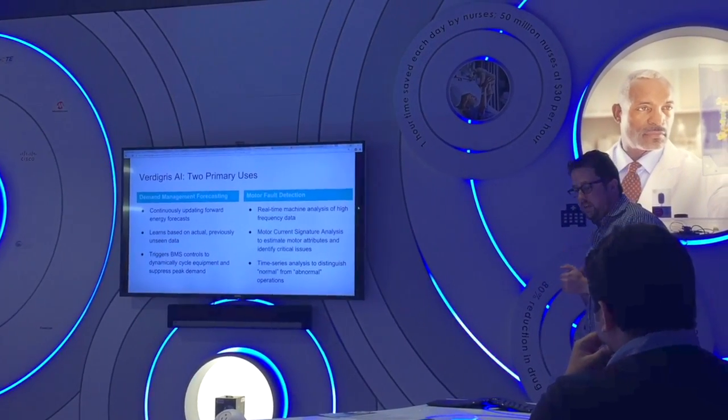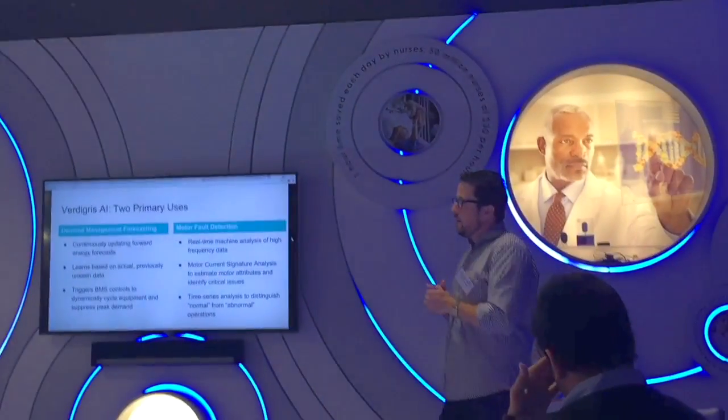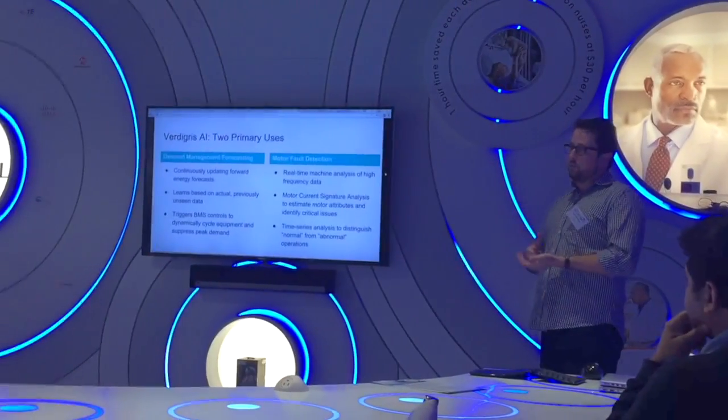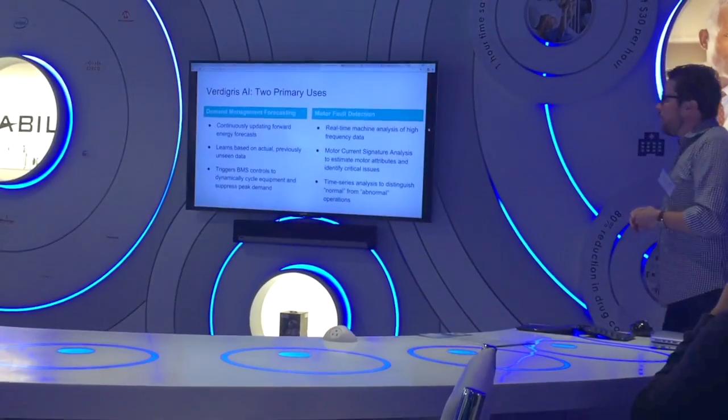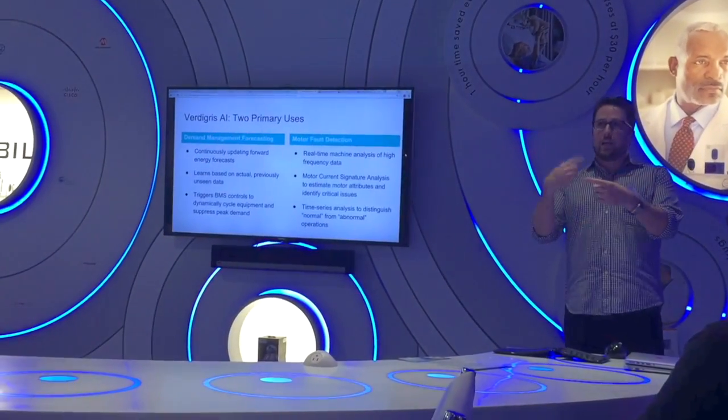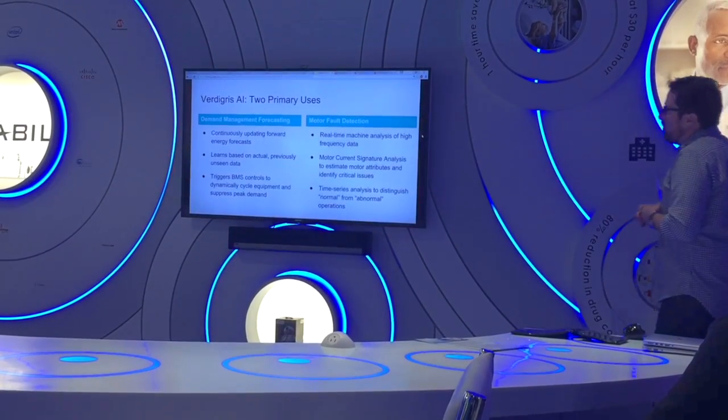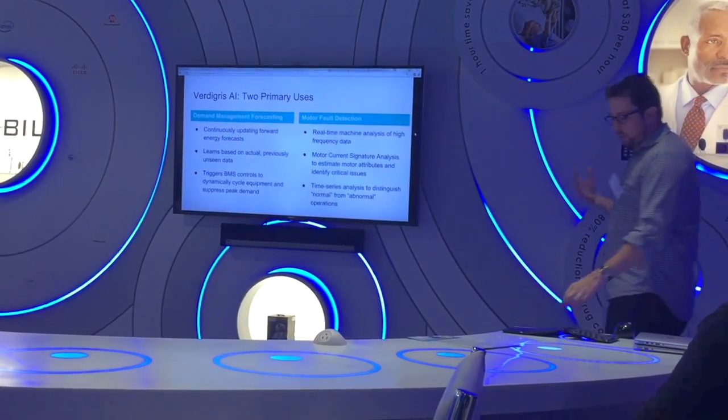On motor fault detection, it's essentially a form of predictive maintenance. It's kind of the holy grail of industrial IoT is figuring out when things are going to break before they do. And one of the things we can do using motor current signature analysis is actually identify these degradations in motor operation and equipment performance that can be indicative of a failing piece of equipment.